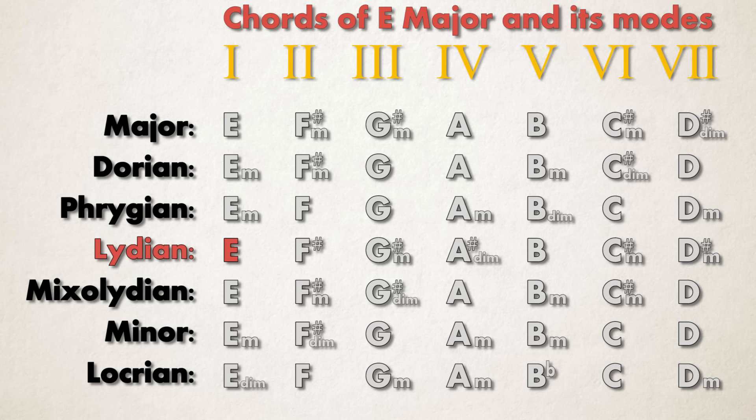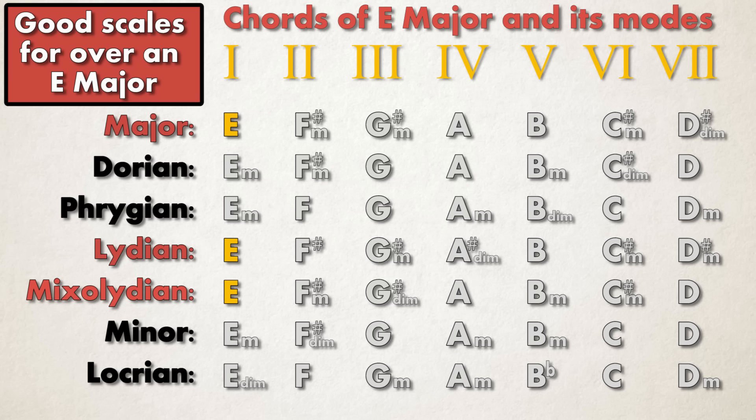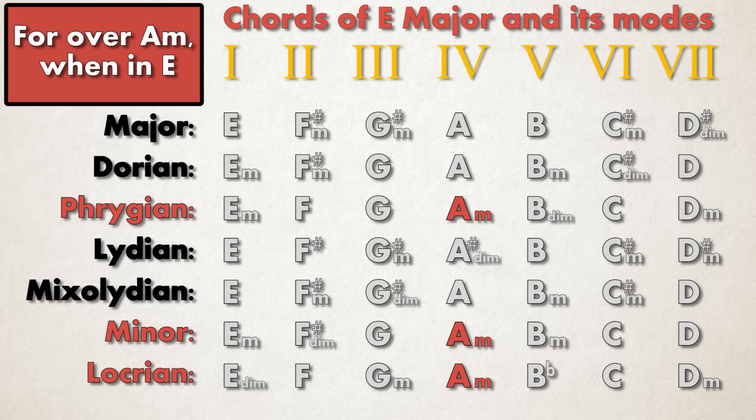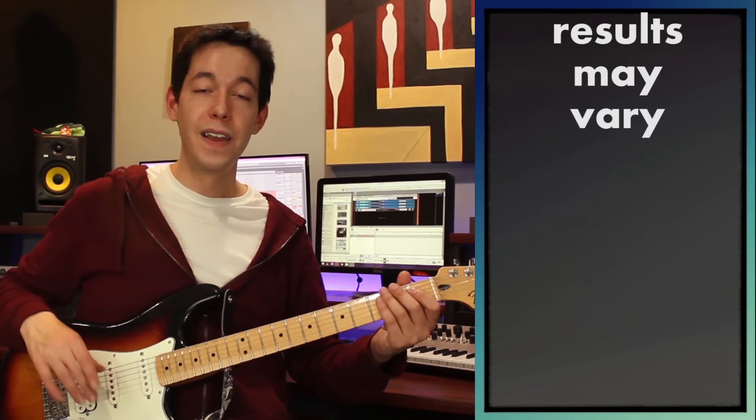When the E major chord pops up, what scales could E major be the tonic of? It could be the tonic of E major, E Lydian, or E Mixolydian — all those scales and modes have a major one chord, so I could play those scales over E major. For the A minor chord, what E scales have an A minor as the four chord? E minor, E Phrygian, and E Locrian all have an A minor in them, so those would be choices to play over that A minor chord.